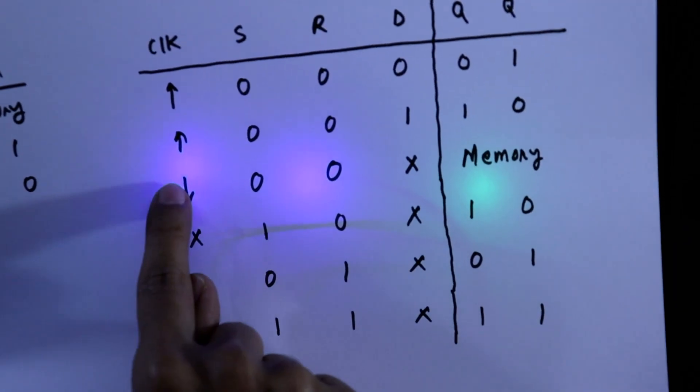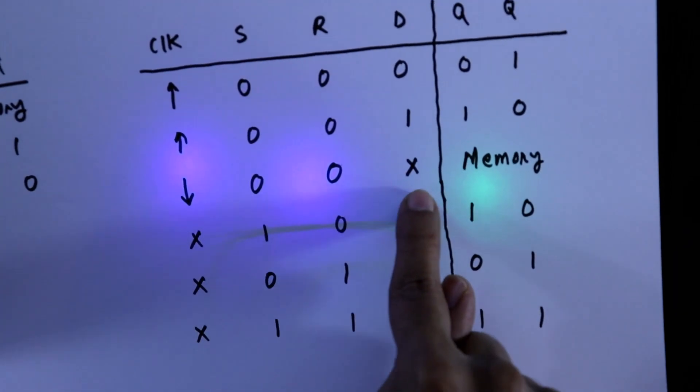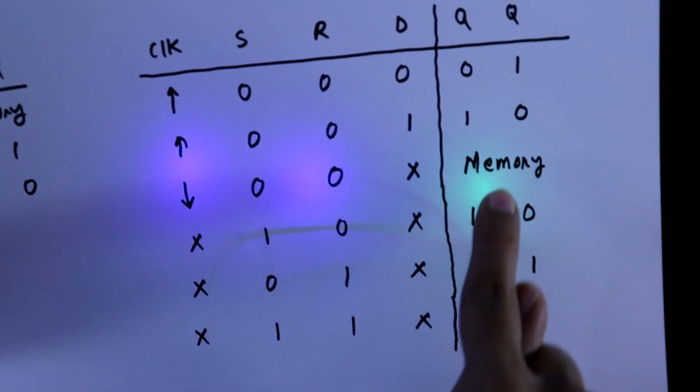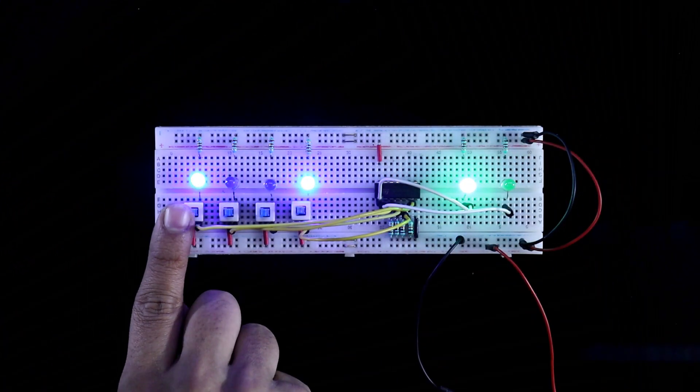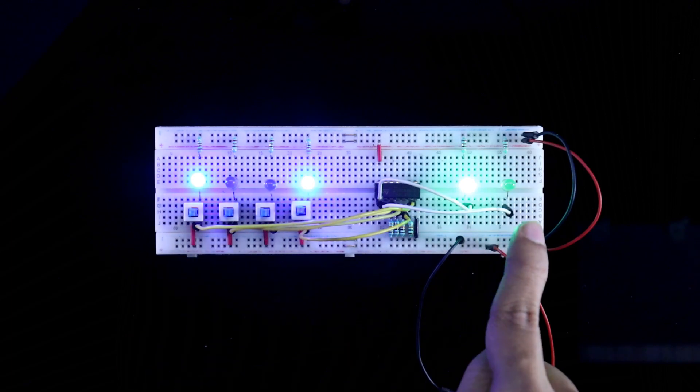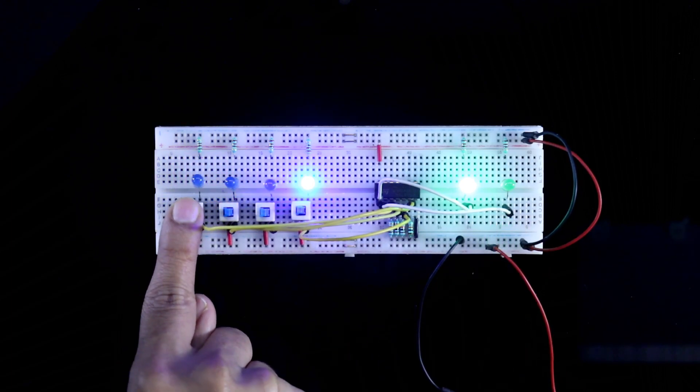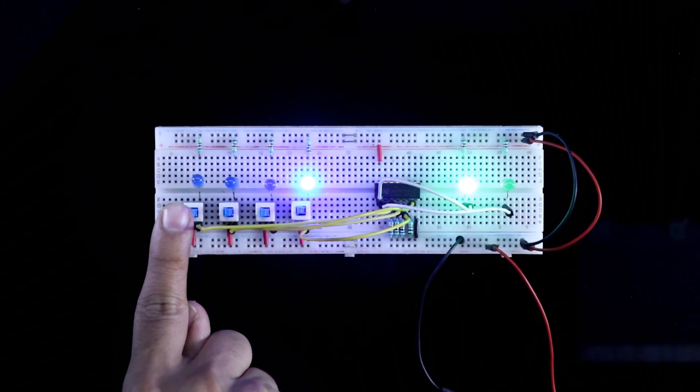If clock 1 to 0, then it doesn't matter whether D is 1 or 0, it will be memory. So now if I keep the clock as 0, it will not change. So it means it is memory.